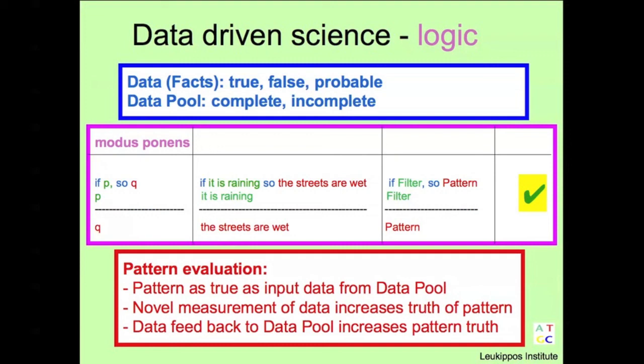In conclusion, the quality of the data in the data pool are the key. The pattern is dependent on the kind of filter we define. However, the logical truth of the pattern is independent of the filter. All kind of filters result in logically true patterns.